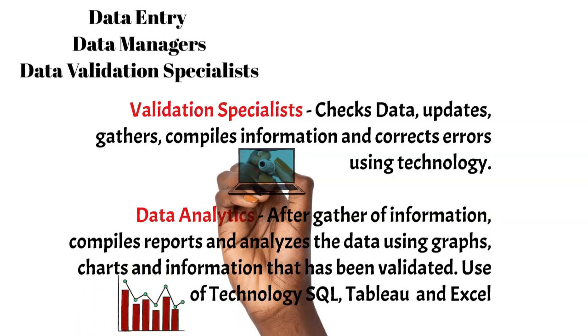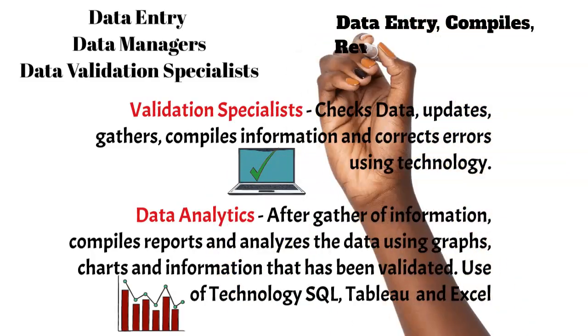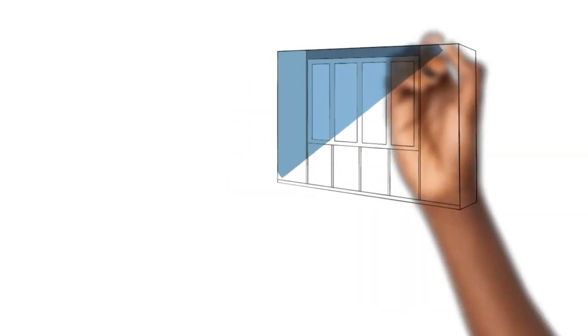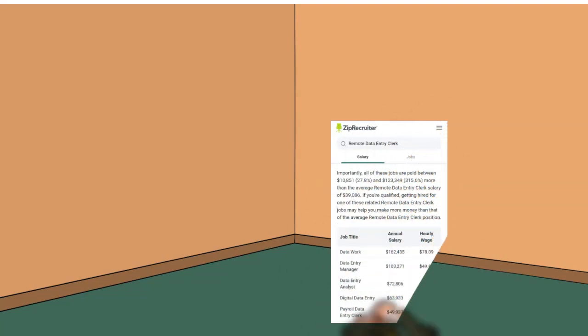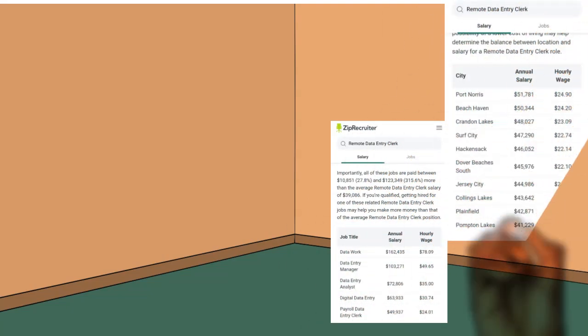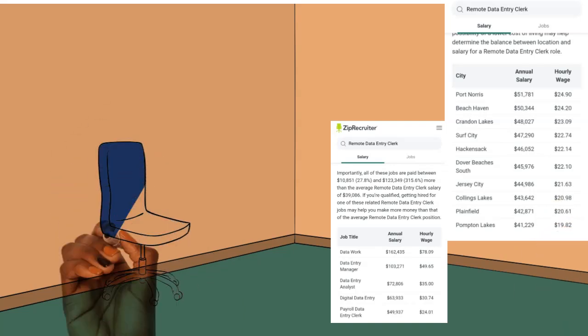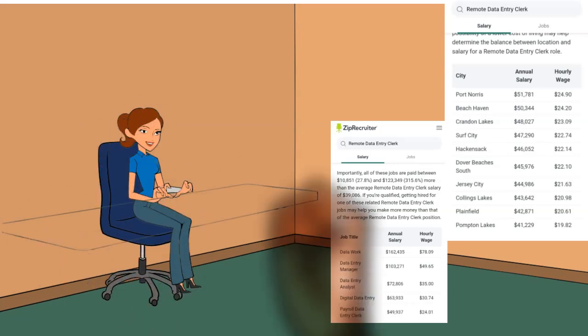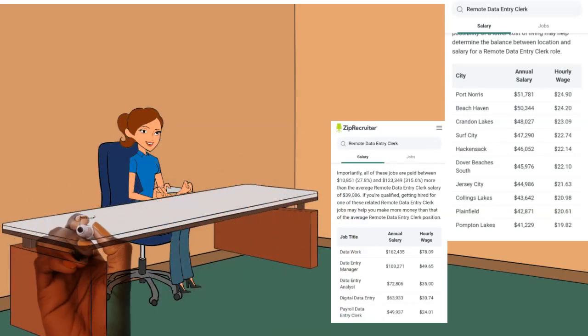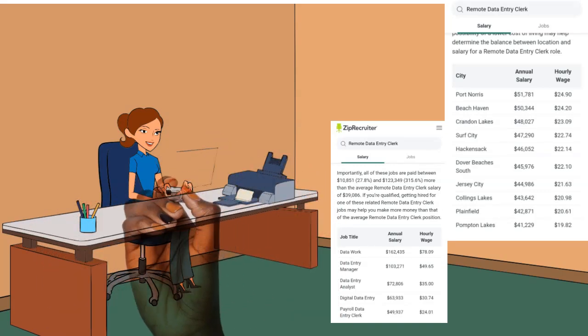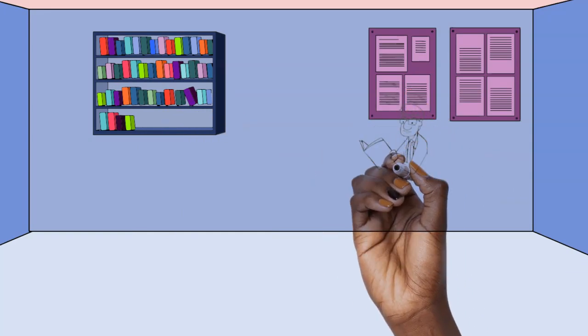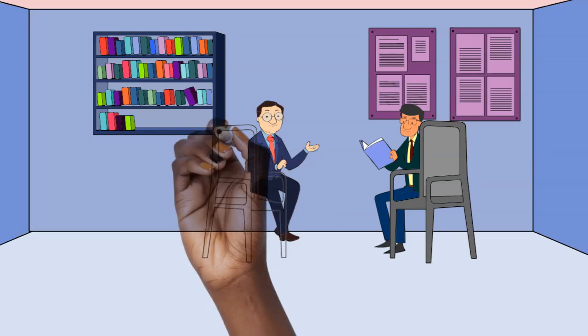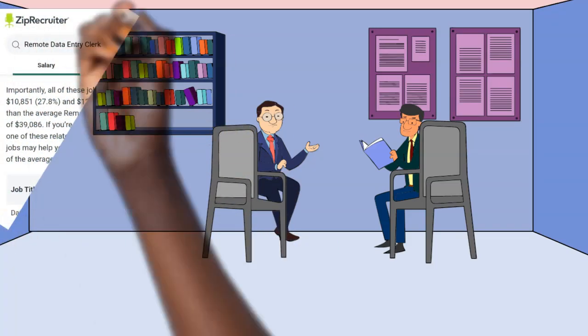You can also look for salaries on O-Net Online and here at ZipRecruiter. We're going to start with the data entry clerk. Many of us have entered data and as you can see, the salary in general for that data entry clerk, depending on where you live is anywhere in the 40s up to 51 to $52,000 a year. Now this is generally, you may have a lot of experience and get paid more than that, but let's say you've been doing this for a while and you've done data work or you're a data manager. You're going to be making more in the $60,000 range, $70,000, maybe even $80,000 a year.